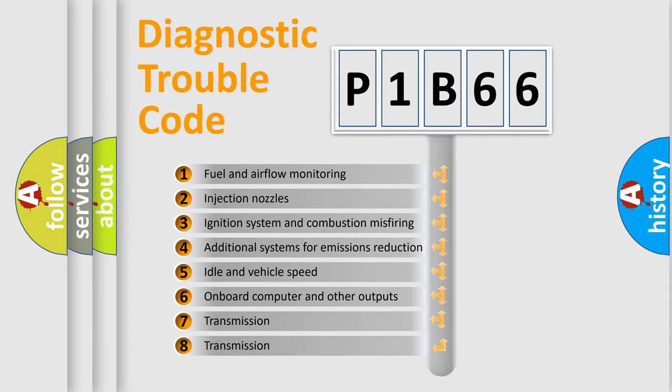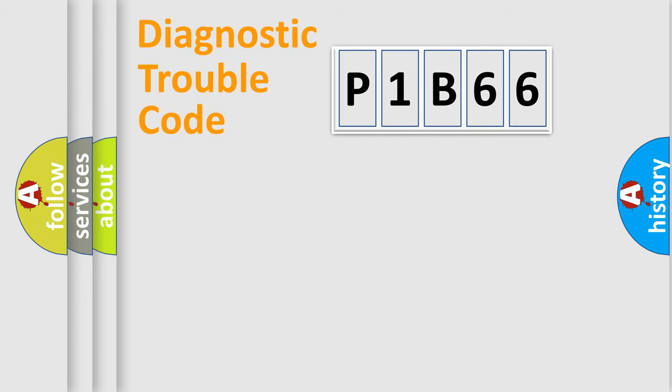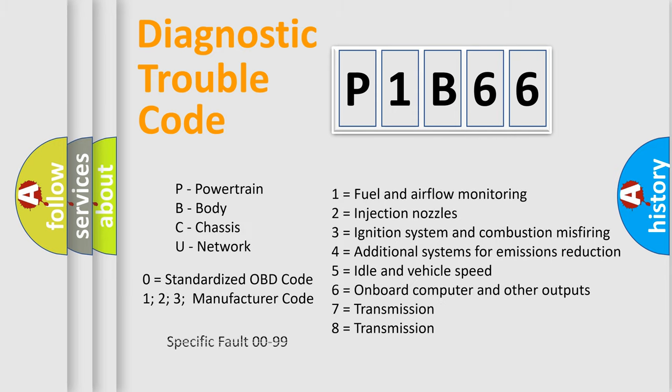The third character specifies a subset of errors. The distribution shown is valid only for the standardized DTC code. Only the last two characters define the specific fault of the group. Let's not forget that such a division is valid only if the second character code is expressed by the number zero.